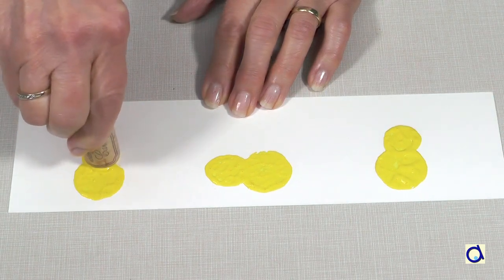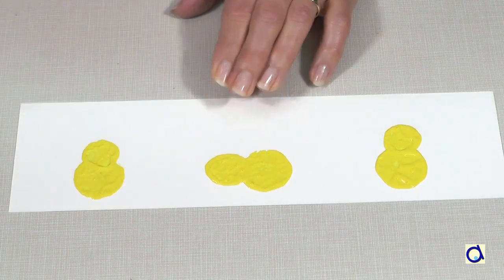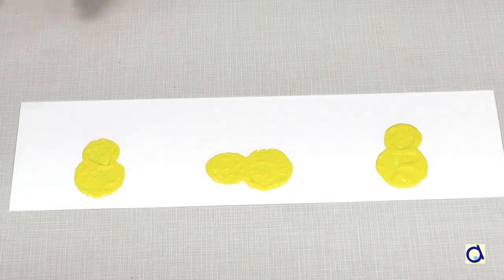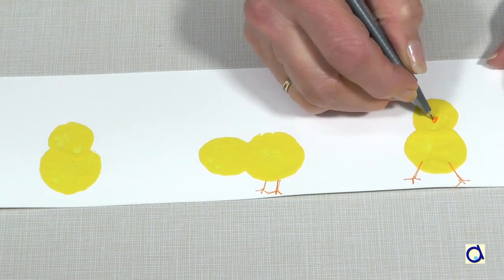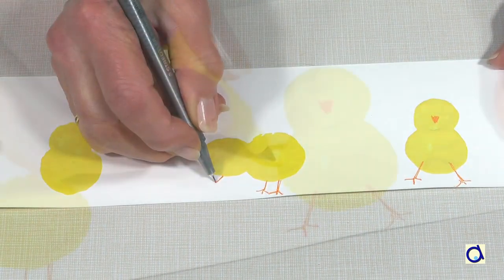Let the paint dry. With an orange marker, represent the legs and the beaks of the chicks. With a yellow marker, represent the open wings.